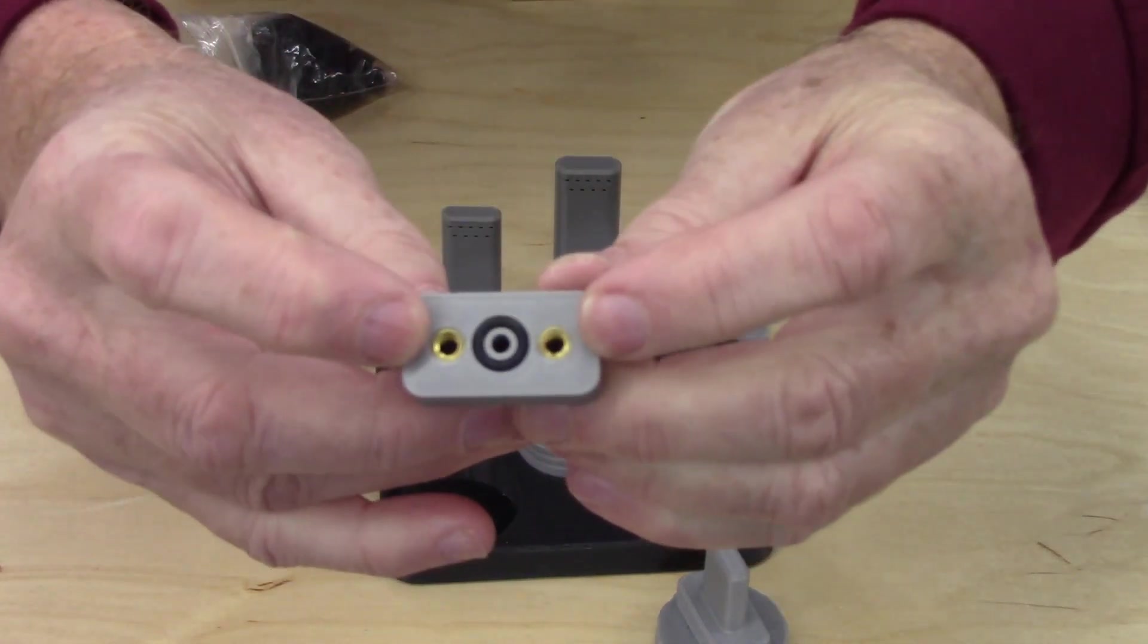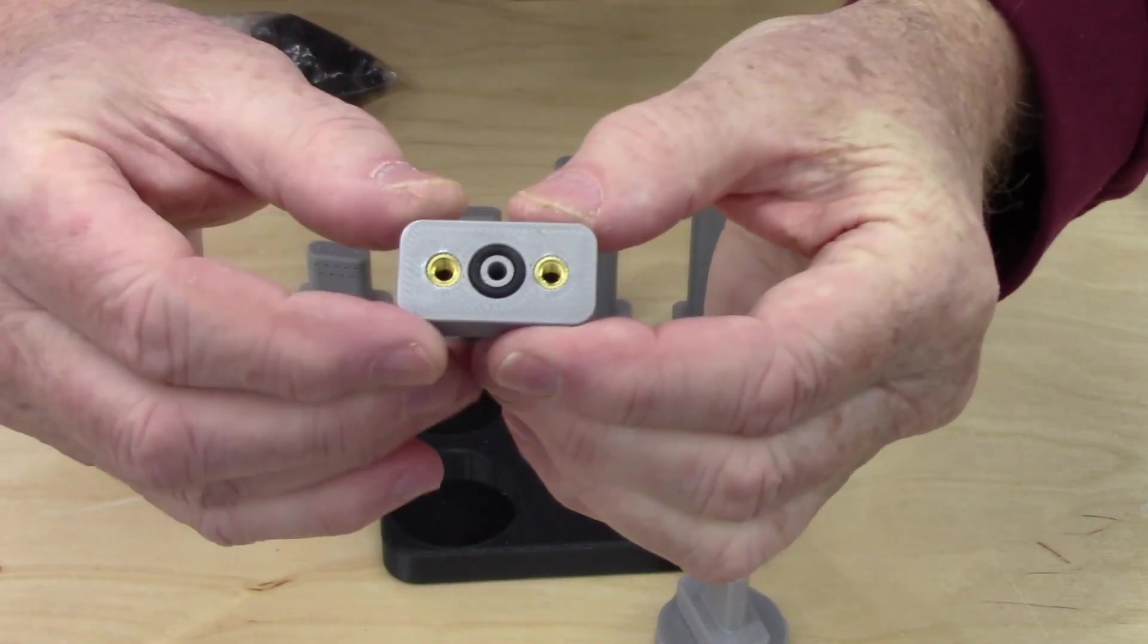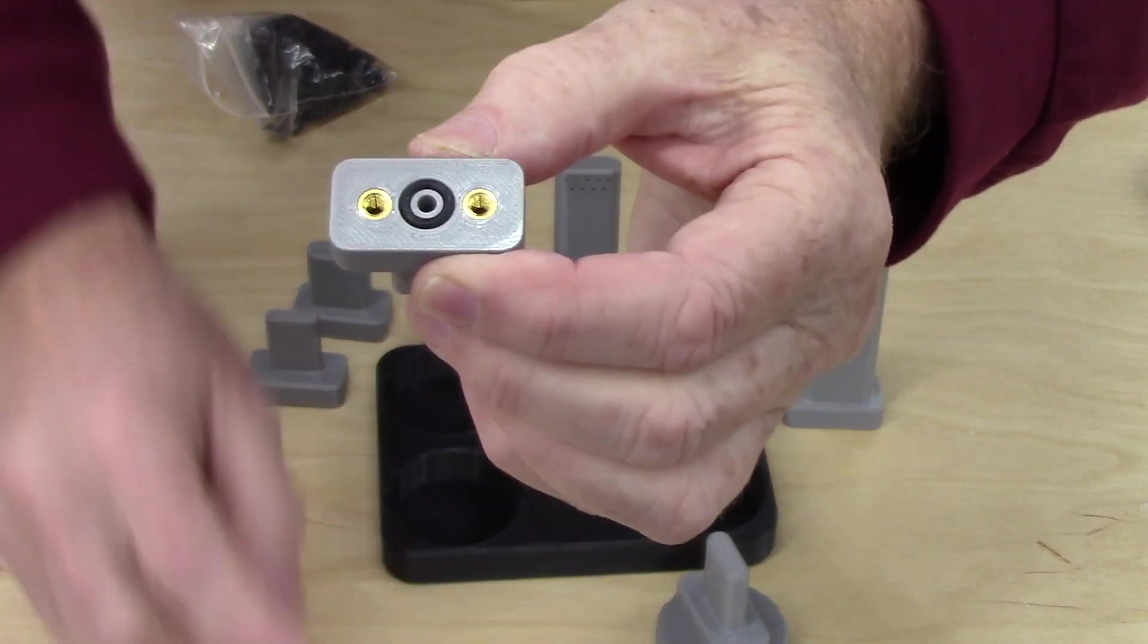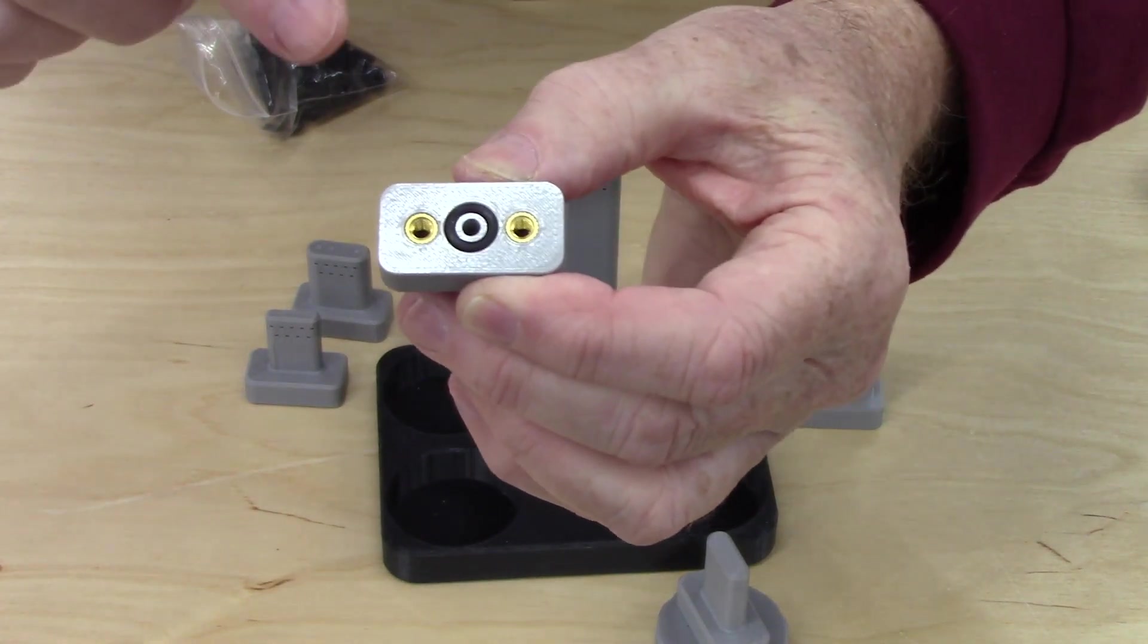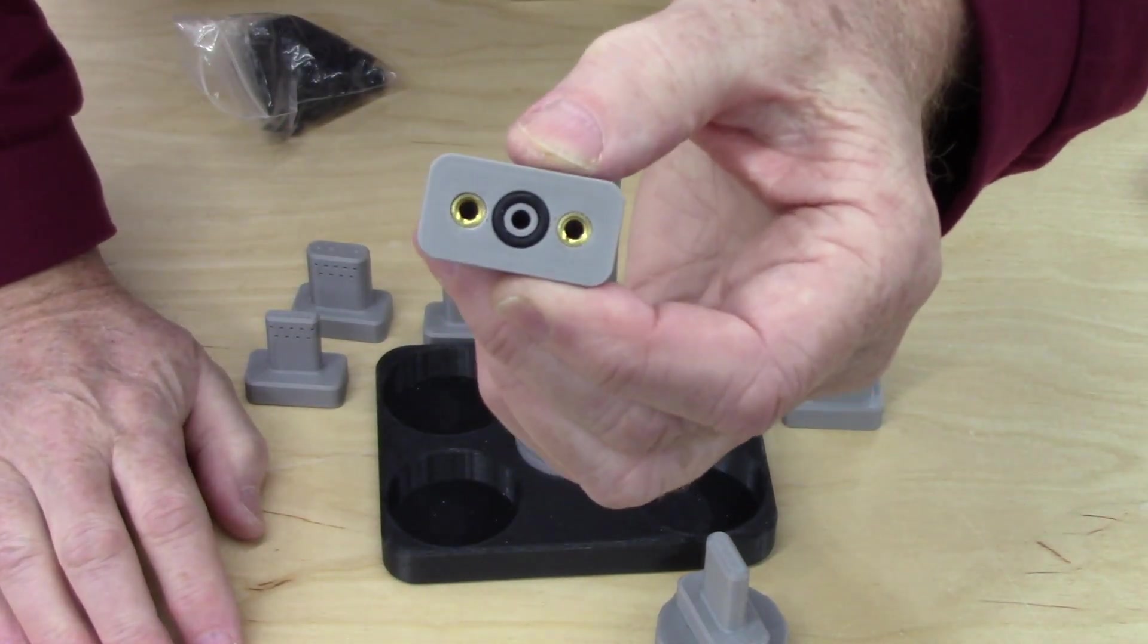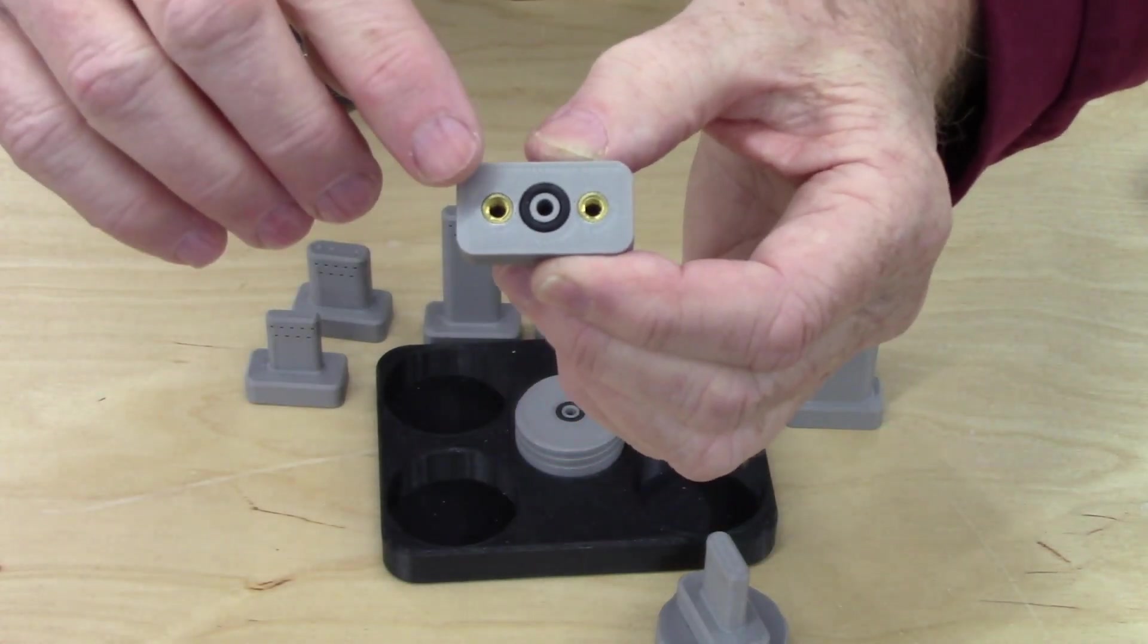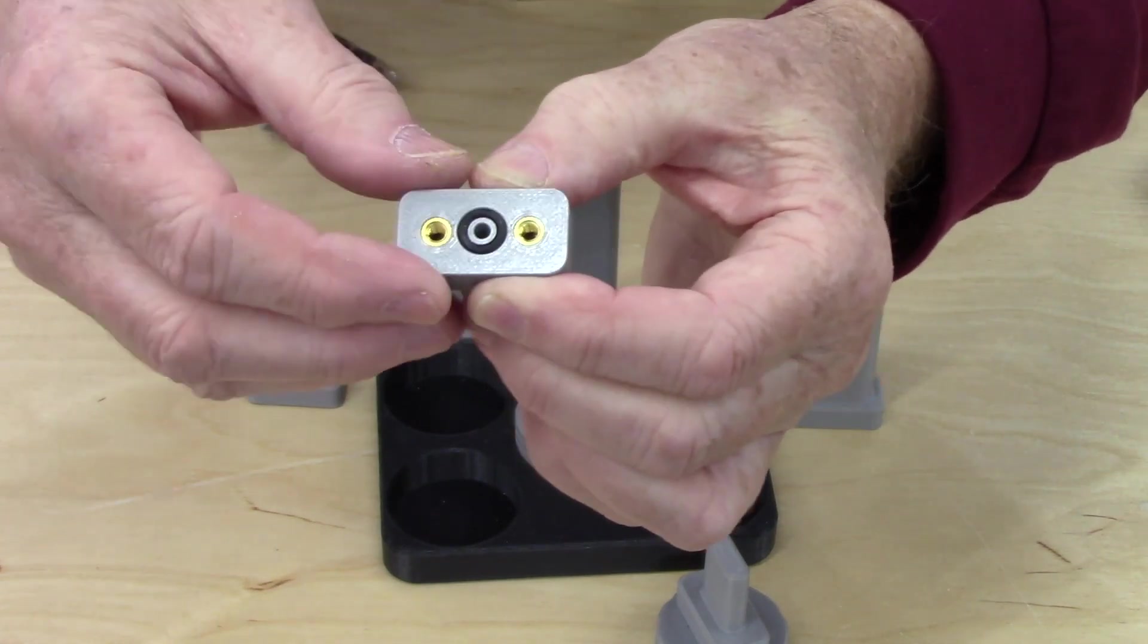I also changed to heat set inserts. The inserts I used were M4 by 6mm OD, 6mm long. And I made these holes a little deeper, so there's room for the excess material when you set this in place to go to the bottom and not prevent you from going all the way in. Now I set these in place using a soldering iron with a temperature set at 310 degrees Celsius. And it took about five or six seconds for that heat to transfer down to the tip and then insert the heat set insert.